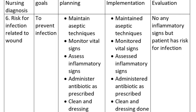Nursing Diagnosis 5: Risk for infection related to wound. Goal: To prevent infection. Planning includes: maintain aseptic techniques, monitor vital signs, assess inflammatory signs, administer antibiotics as prescribed, and perform wound cleaning and dressing.